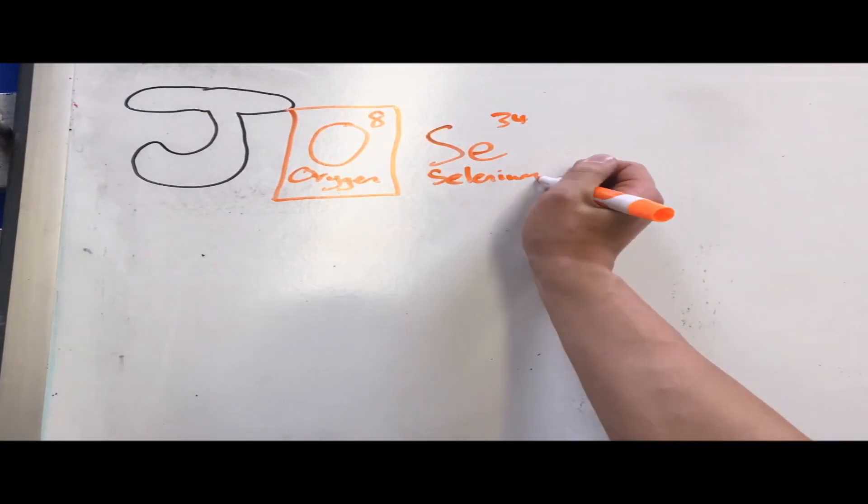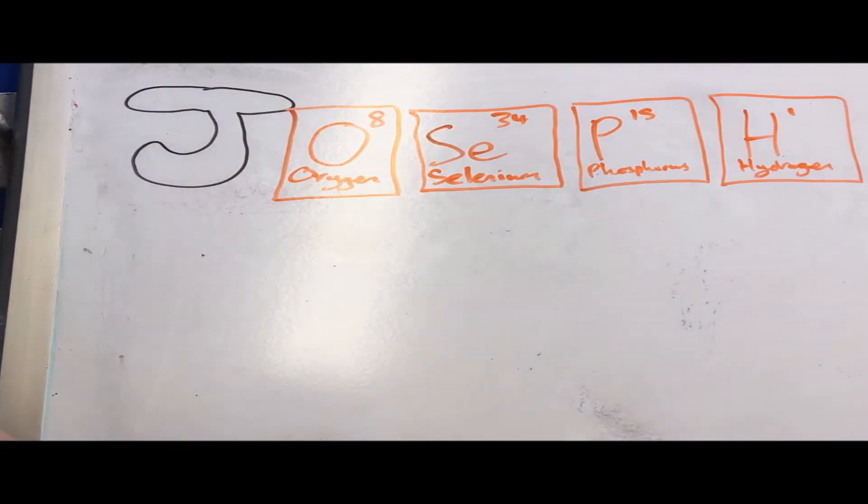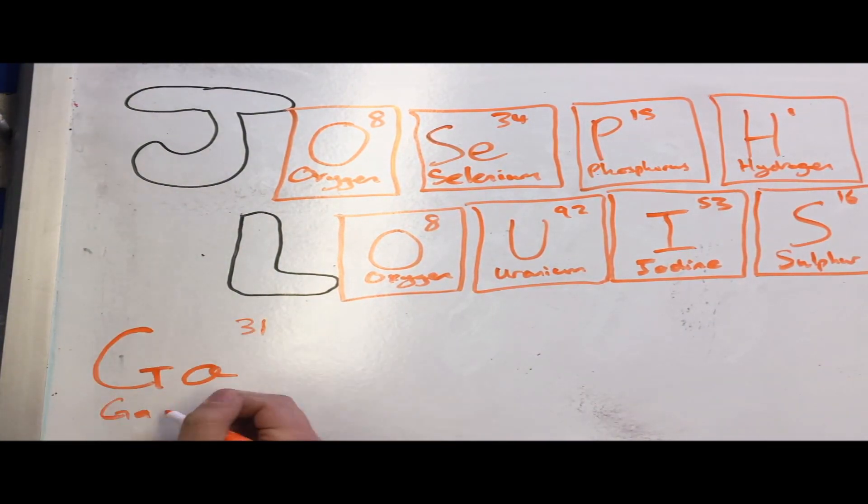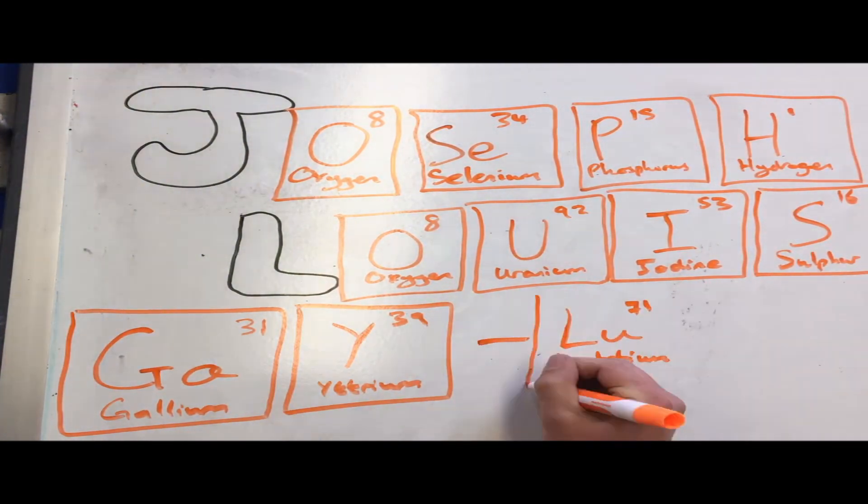So we're here to tell you about the guy, but sadly he's a little shy. So no one knows about his life, he succeeded through many a strife. His name starts with a J, and he was a classic. That's right, it's Joseph Louis Gay-Lussac.